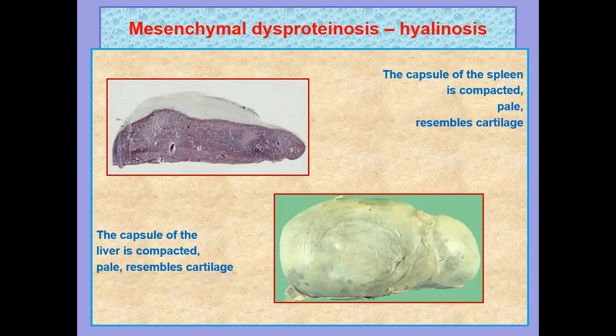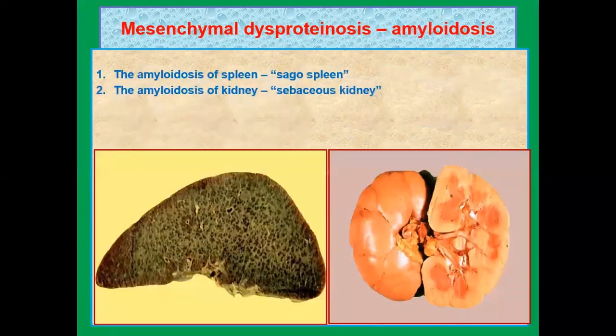The capsule of the liver is also compacted and pale, resembling cartilage. The amyloidosis of the spleen and amyloidosis of the kidney is called sebaceous kidney.